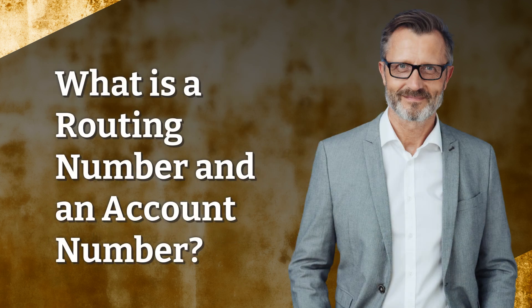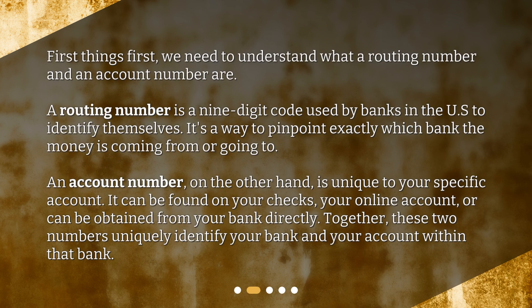What is a routing number and an account number? First things first, we need to understand what a routing number and an account number are. A routing number is a nine-digit code used by banks in the U.S. to identify themselves — it's a way to pinpoint exactly which bank the money is coming from or going to. An account number, on the other hand, is unique to your specific account. It can be found on your checks, your online account, or can be obtained from your bank directly. Together, these two numbers uniquely identify your bank and your account within that bank.